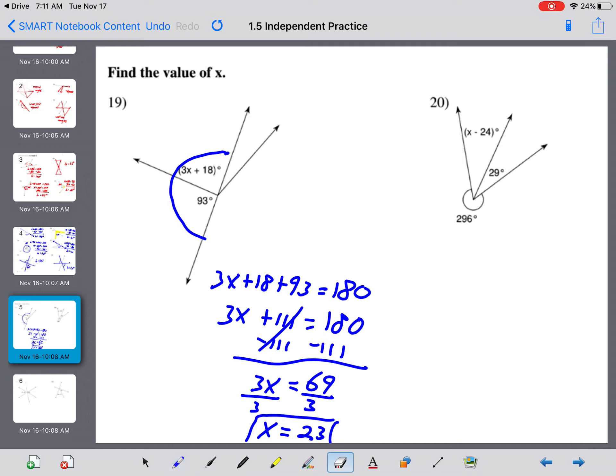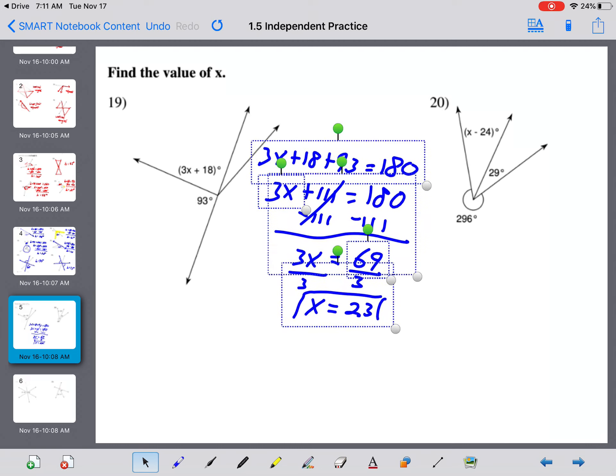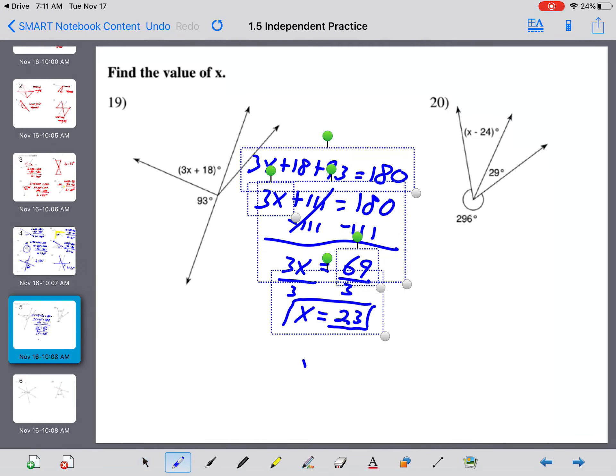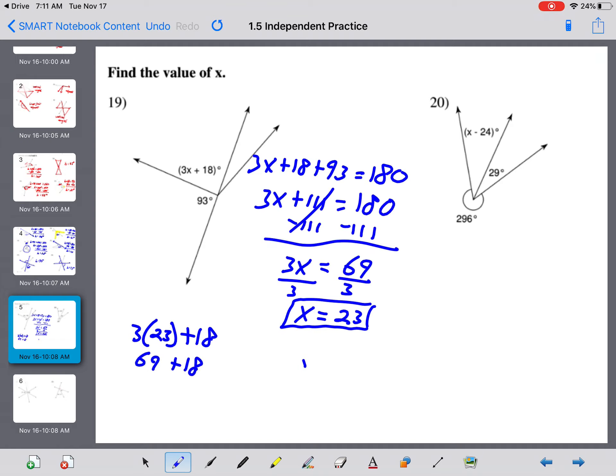Now, in order to find the angle, we now have to plug that in. So x equals 23 degrees. And now I need to plug that in for 3x plus 18. 3 times 23 plus 18. Well, we know 3 times 23 is 69. Plus 18 gives you 87 degrees.